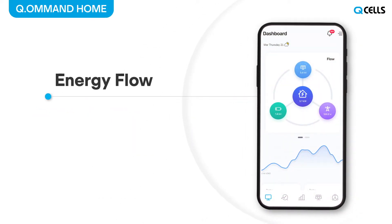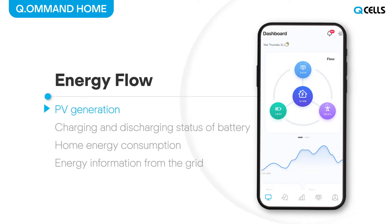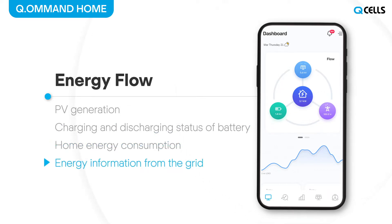On the energy flow screen, users can monitor the PV generation, charging and discharging of battery, home electricity consumption, and grid information updated in real time. You can check out the current electricity flow on one screen.